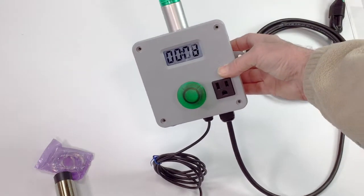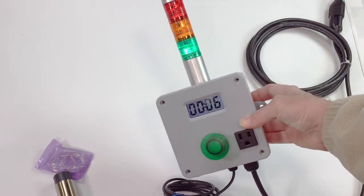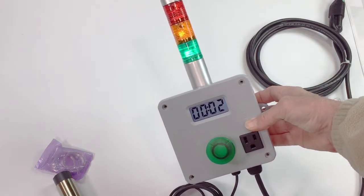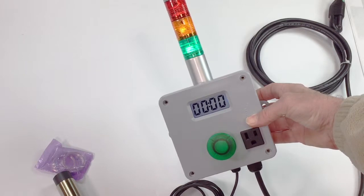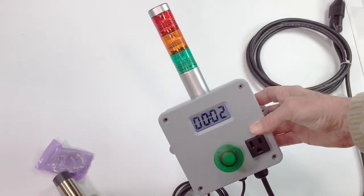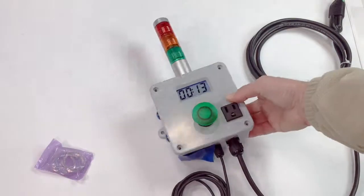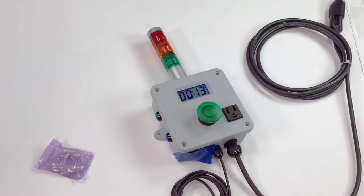There's the early warning that calls the operator over to the station. End of cycle - we'll break the contact and that's the end of the cycle. Hope this helps. See you next time.